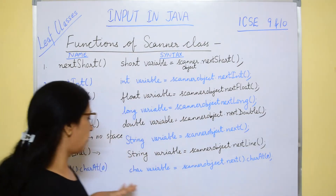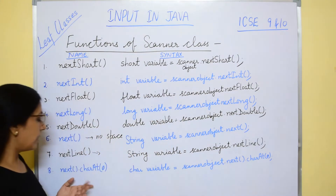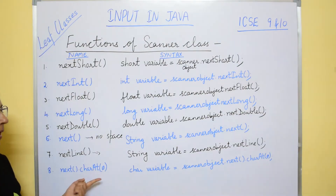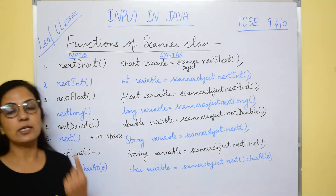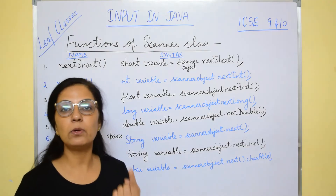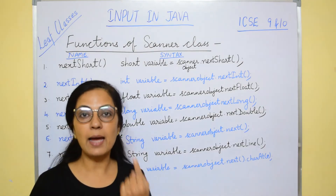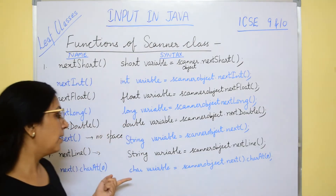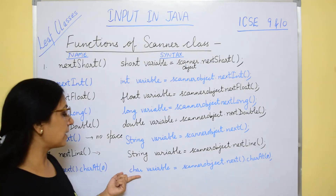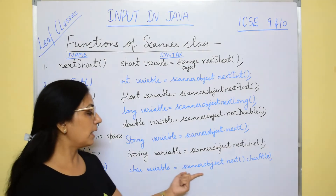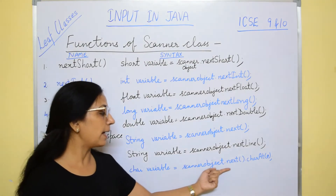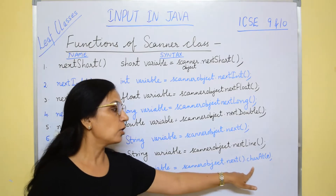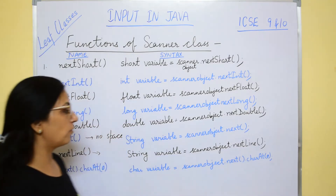The next function is next.charAt(0). This function is used to input a char type value — just a single character. The syntax is: char variable = scannerObject.next().charAt(0).